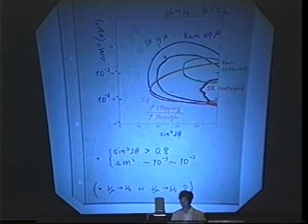And I can roughly say that the sine square 2 theta is larger than 0.8, and delta m square is somewhere around 10 to the minus 3 to 10 to the minus 2.